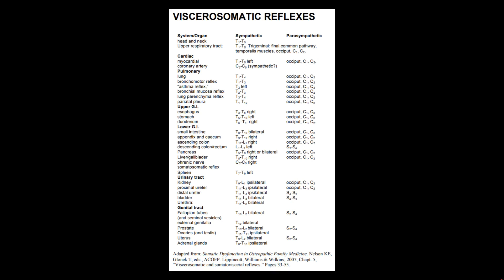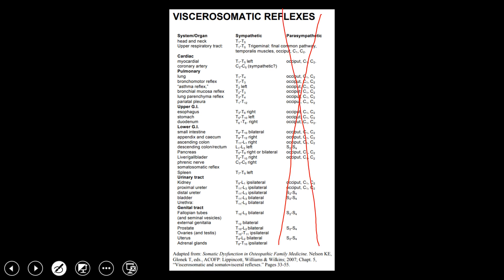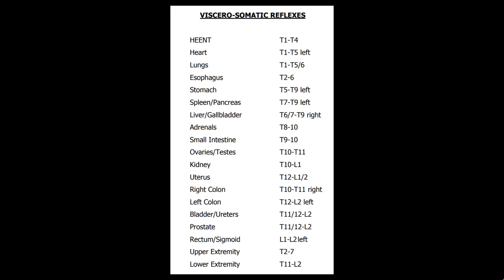So moving on, this is the viscerosomatic reflexes chart from the American College of Osteopathic Family Physicians. It is the first search result if you search this on Google, and it's a little bit messy. So we're going to use a different chart and simplify this a lot. The first way we're going to simplify it is by only talking about the sympathetic viscerosomatic reflexes today, not the parasympathetic, because the parasympathetic viscerosomatic reflexes are fairly low yield. The majority of them have to do with the occiput, C1, and C2.